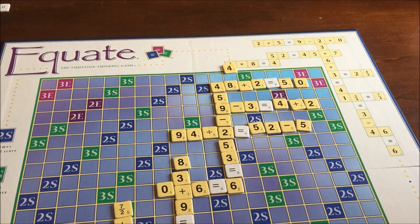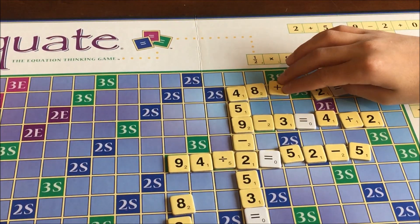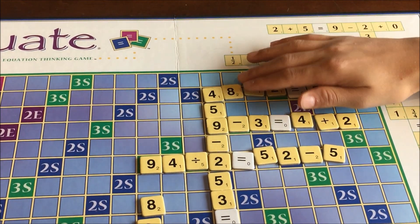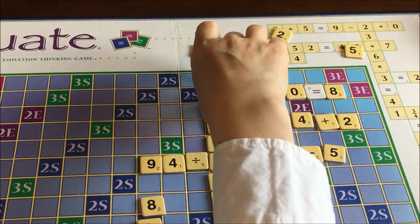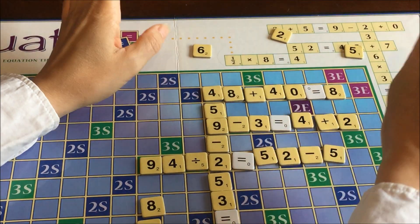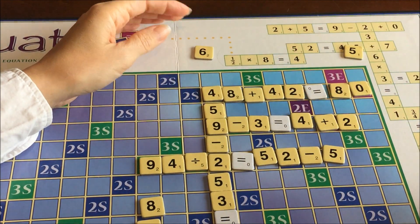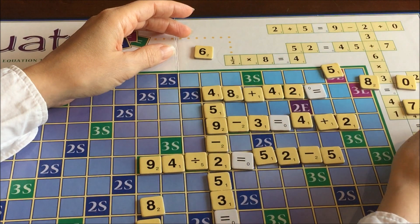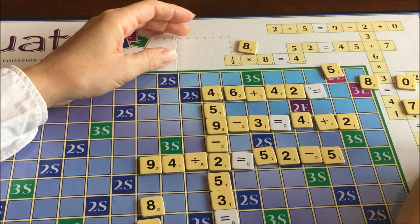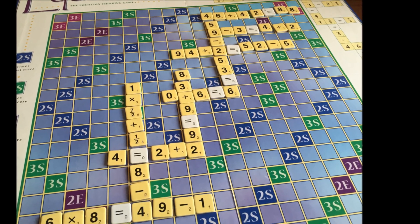In this particular play my son really wants to make use of this triple equation score that's all the way on the right side of the board. He has some great tiles but he just can't figure out how to get that triple equation score. I come in and I fiddle around with his tiles as well and we're going to try to build an equation that makes use of that four on the left side which was already part of a previous equation, and try to give him an equation that's long enough in order to get that triple equation score. It does take us a little while because we're fiddling around with all of his different tiles and finally we get something that works and he's thrilled.